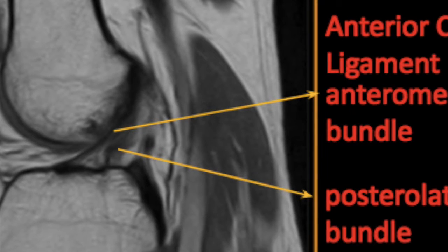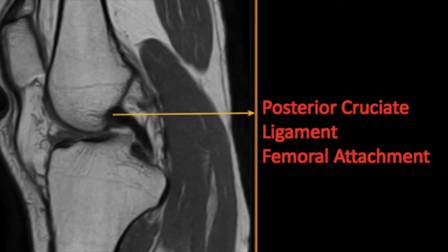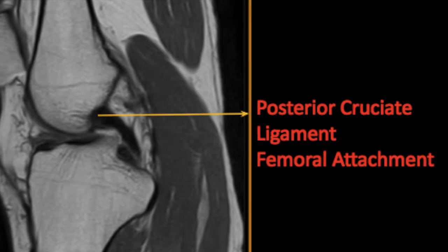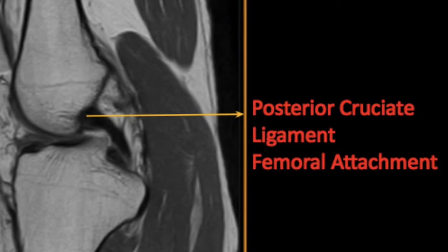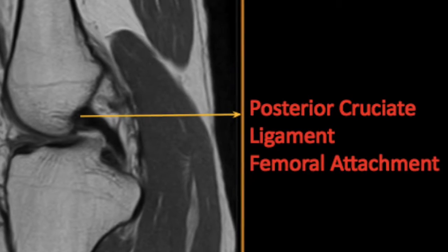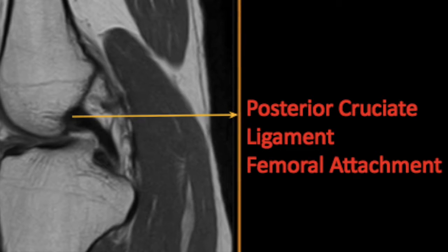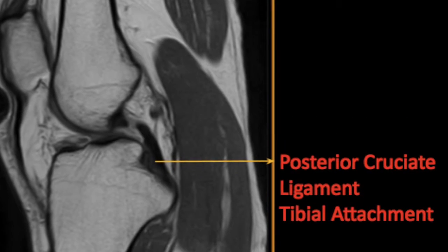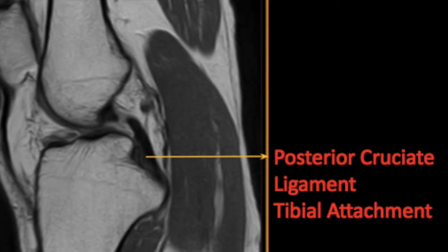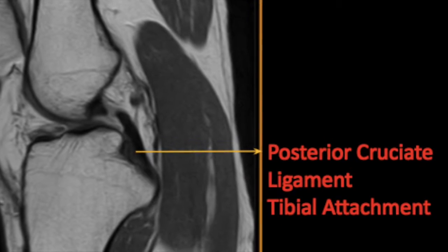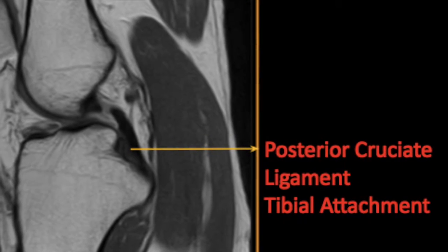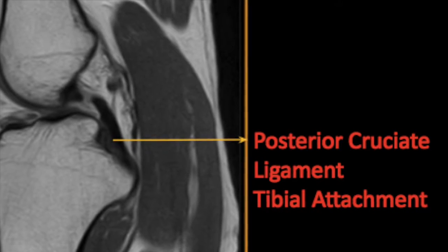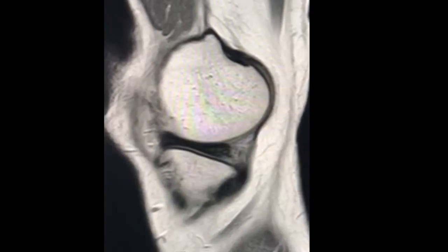Coming to the posterior cruciate ligament. The posterior cruciate ligament originates in the lateral aspect of the medial femoral condyle, crosses the ACL, and attaches to the posterior intercondylar fossa of the tibia. It is a central stabilizer of the knee, restraining posterior tibial displacement on the femur.